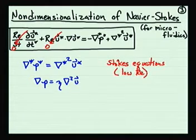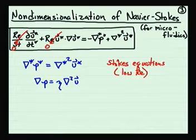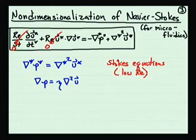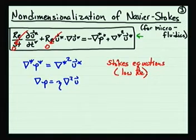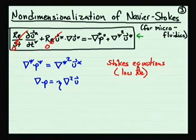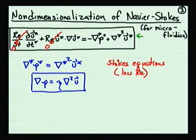In summary, we can non-dimensionalize the Navier-Stokes equations, which leads to the non-dimensionalized form shown here. That form allows us to neglect the two terms on the left-hand side, giving us the simplified Stokes equations shown here, which are the governing equations used for low Reynolds number flows.